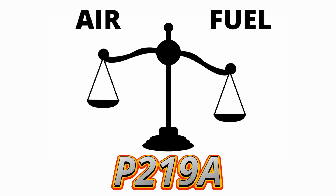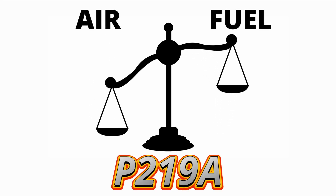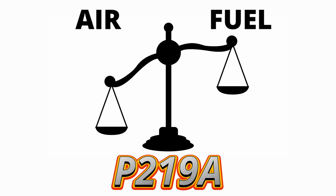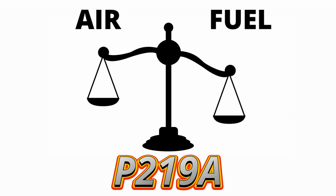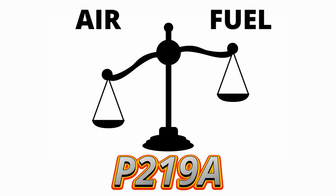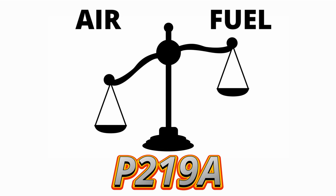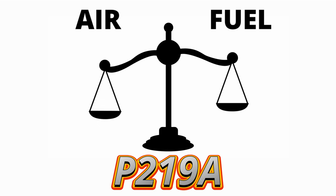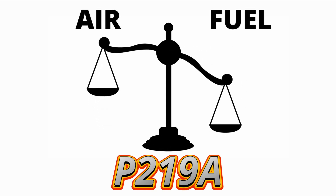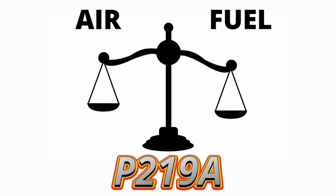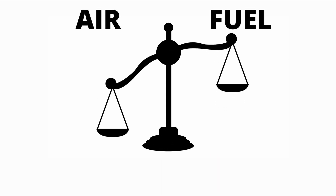The P219A code means the engine control module has detected an air-fuel imbalance in Bank 1. But here's the problem: it doesn't tell you whether the mixture is too rich or too lean. Because this code doesn't pinpoint a specific problem, diagnosing it requires a lot of patience and time. So let's go through the potential causes.